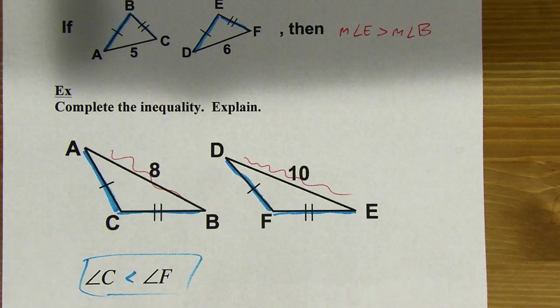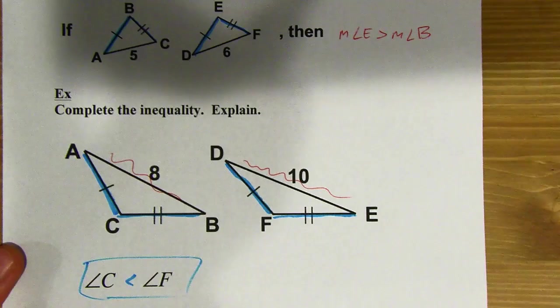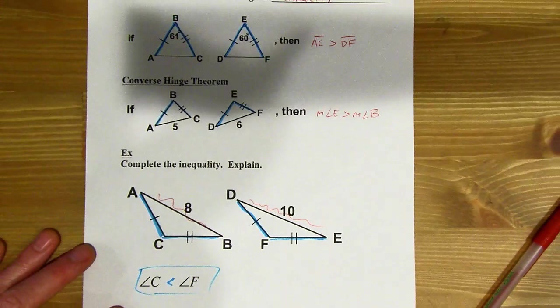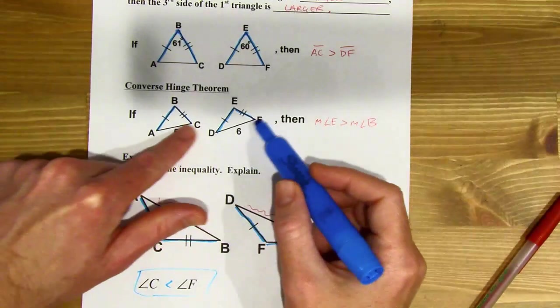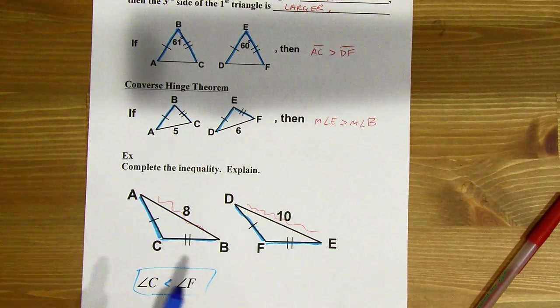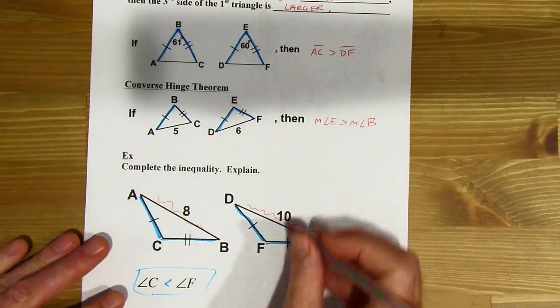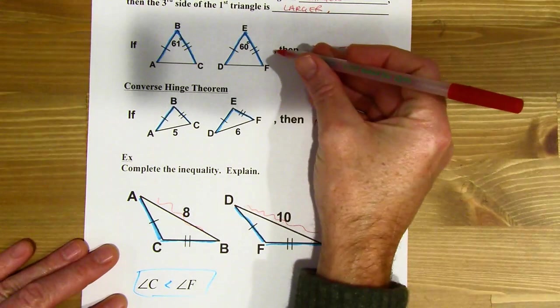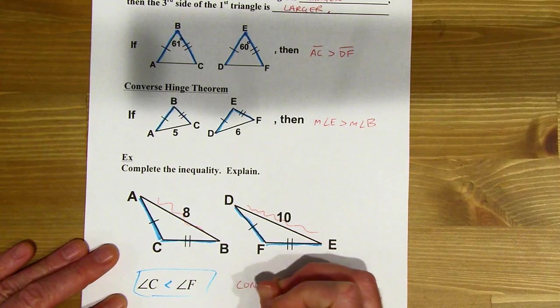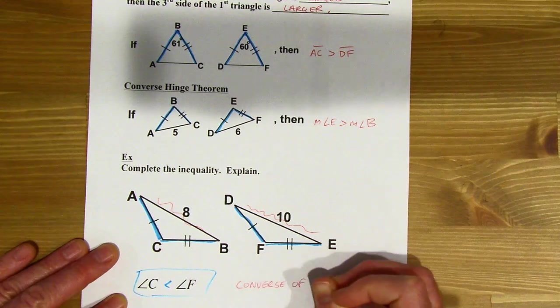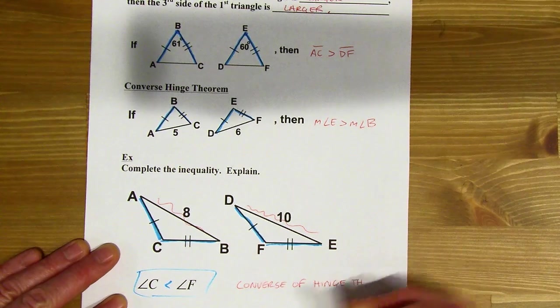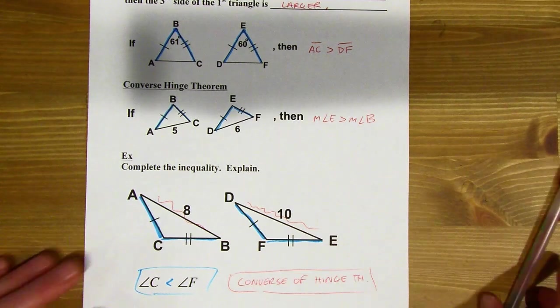And then the explanation, oh, so I'm not going to write out a paragraph here, but I do want to identify, am I using the hinge theorem or its converse? Well, I figured this out using the third side. I didn't know the angle measures, right? So that means I'm using the converse, right? It's this situation as opposed to the original situation. So this is the converse of the hinge theorem. And very simple explanation, just really identifying what theorem I'm using. There it is.